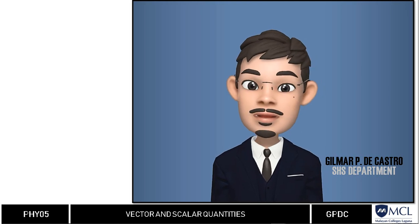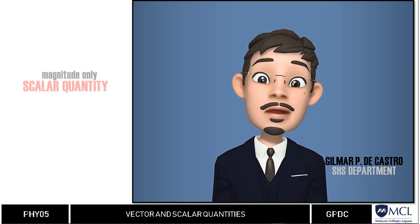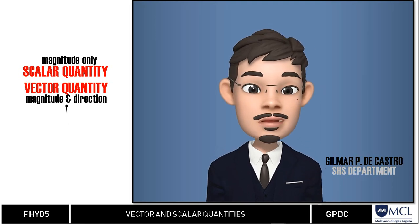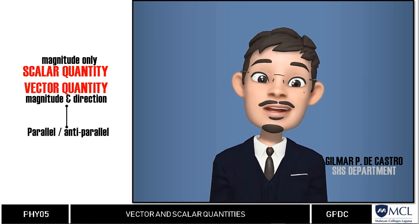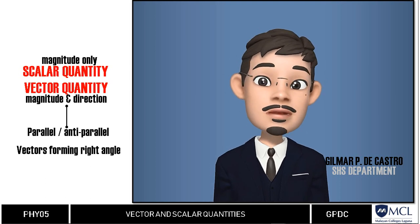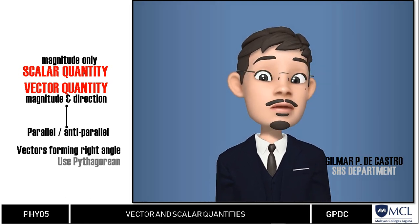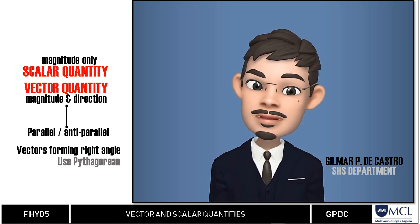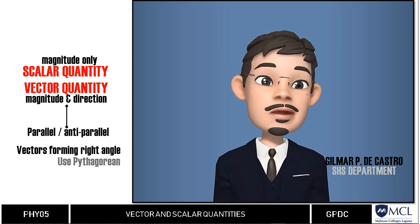What we had so far in this video is the difference between the scalar and vector quantities. We also tackle how to add vectors in parallel and anti-parallel directions and the application of Pythagorean in finding vector sum of vectors forming right triangle. That is all for this video. I am Gilmer Dicasso and see you in the next video.